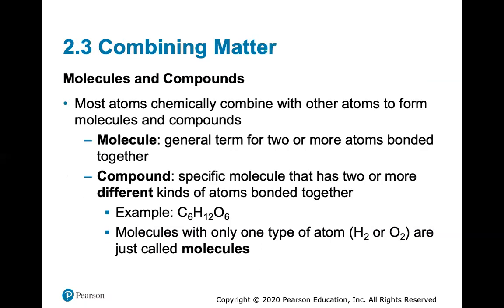Now we'll talk about combining atoms — molecules and compounds. A molecule is a general term for two or more atoms bonded together. A compound is a specific molecule that has two or more different kinds of atoms bonded together. For example, C6H12O6 is the molecular formula for glucose. Molecules with only one type of atom, like two hydrogens or two oxygens, are just called molecules.